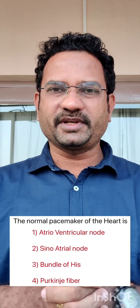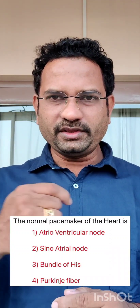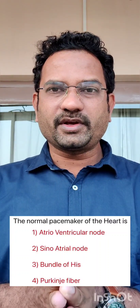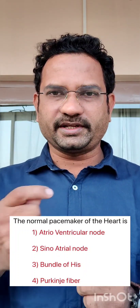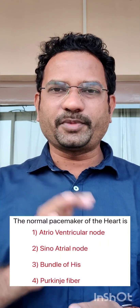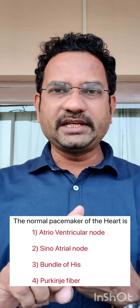Let us understand the concept of these pacemaker cells. All four options are specialized cells of the heart. They are specialized because they have a property called autorhythmicity. Normally, muscle contractions are under the control of depolarization initiated by central nervous system neuronal input. But these four specialized tissues are not under the control of CNS neuronal output — they undergo spontaneous depolarization without neuronal input, which is also known as autorhythmicity.